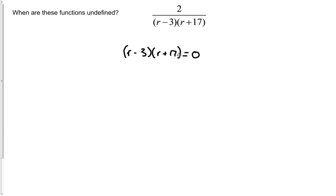Since they're multiplied together, we know that we can split these two sides up here. We have r minus 3 equals zero, which is just going to simply be r equals 3 as one of our problem areas. On the other side, r plus 17 equals zero, subtract 17 from both sides, and r equals negative 17. So the two values of r that are going to cause this function to be undefined are r equals negative 17 or 3.